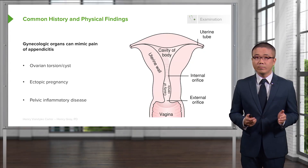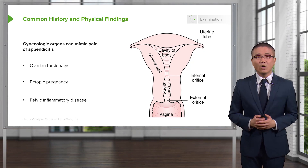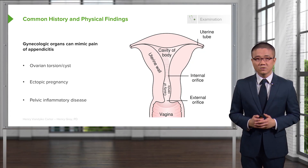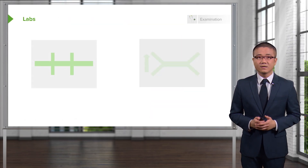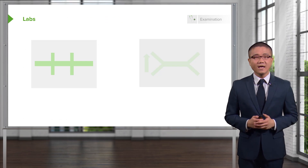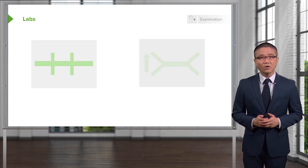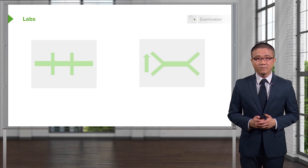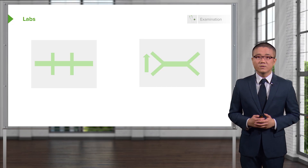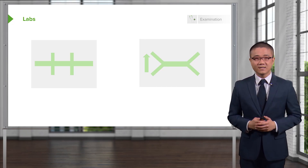Ectopic pregnancies are very important to consider. This is why in all pregnant-eligible age patients, we get a beta HCG or a urine pregnancy test. Most patients get some routine labs. Most chemistries are going to be not very helpful. However, the vast majority of patients who have true acute appendicitis will demonstrate an elevation of their white blood cell count, also known as leukocytosis.